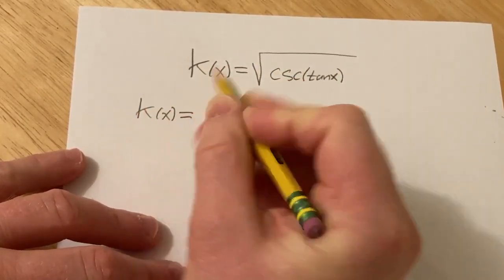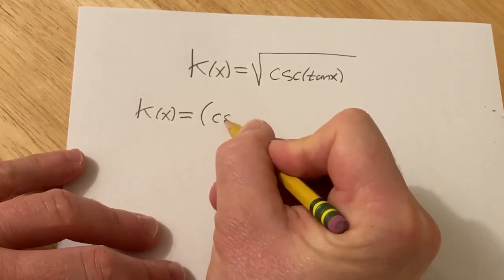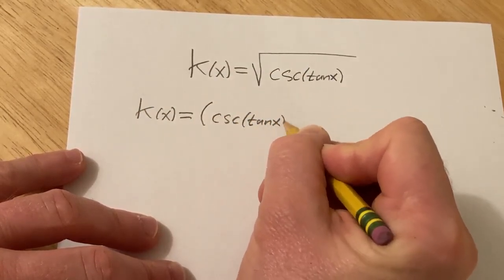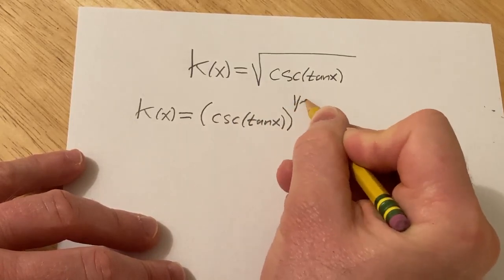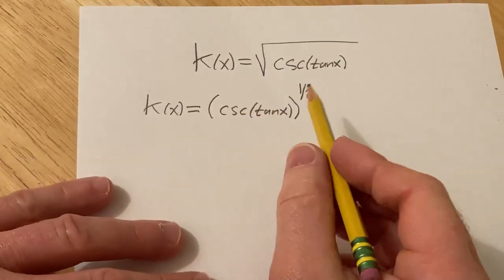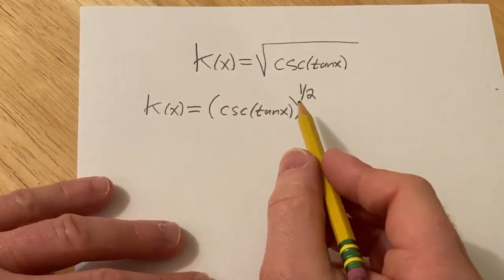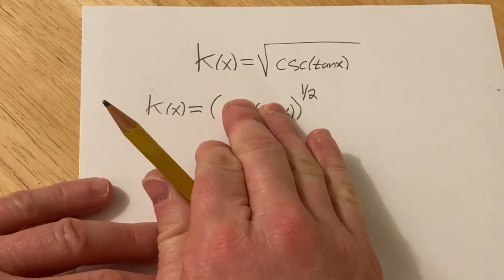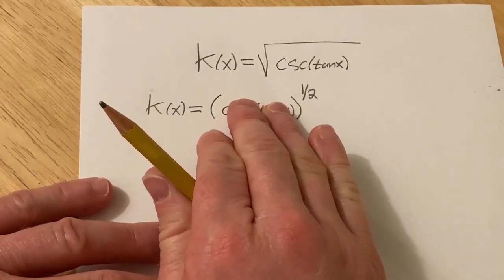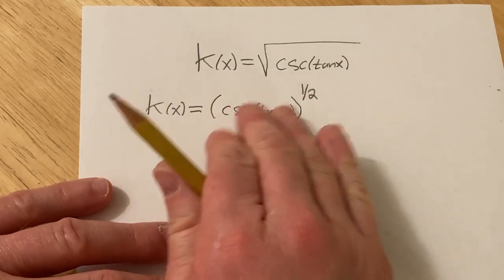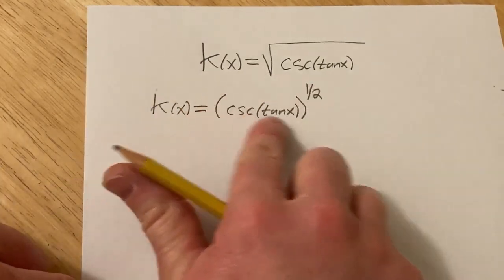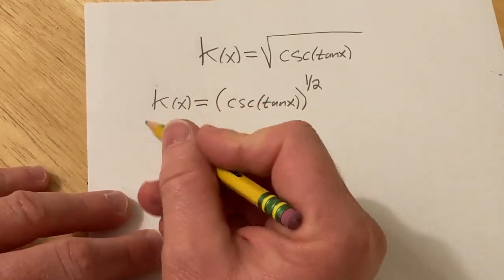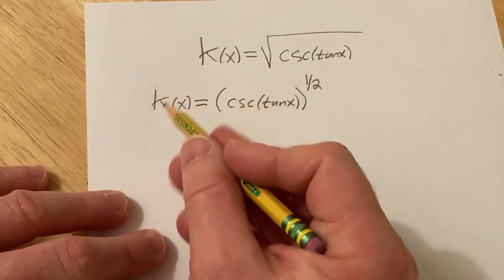So k of x is actually going to be cosecant of tangent of x, and the whole thing here is to the one-half power. And now we're going to take the derivative and apply the chain rule multiple times. There's our outside function — it's like x to the one-half — so we're going to bring down this one-half and leave the inside untouched, and then multiply by the derivative of the inside. That's what the chain rule says to do.